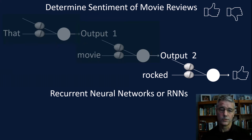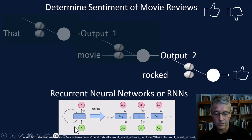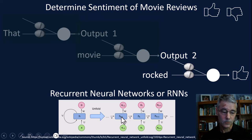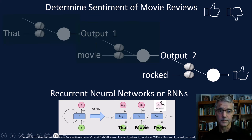We call these recurrent neural networks. In a diagram, they look like a single neuron with a loop back on itself. When we unfold it — a process called unfolding — we have time one, time two, and time three. Moving our inputs in: 'that' gives output one, 'movie' gives output two, and 'rocked' gives our sentiment — the thumbs up.